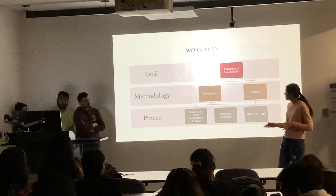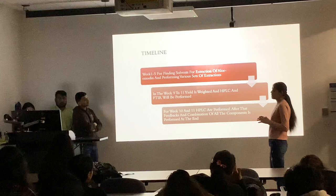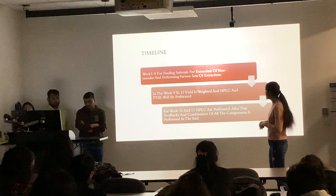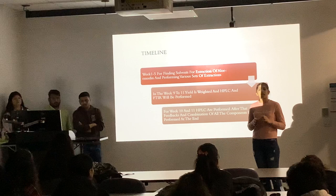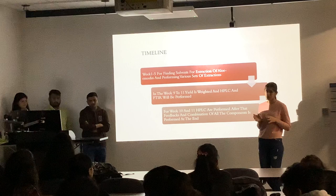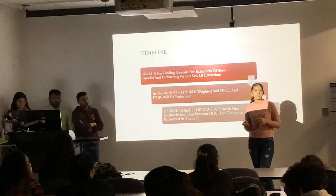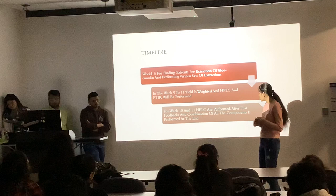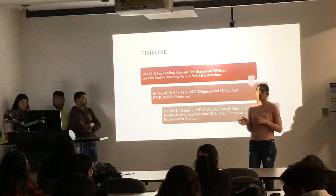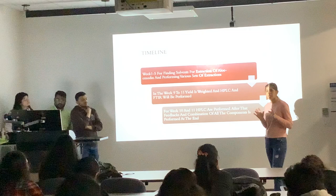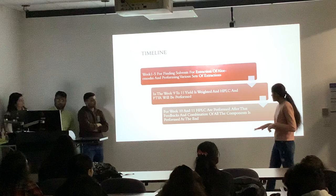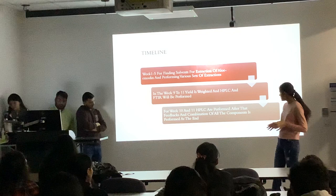This is our timeline. We had to face many changes throughout our project time. In the first five weeks we found the solvent for our extraction methods and used ethanol, then performed three different extraction methods: Soxhlet extraction, sonication extraction, and extraction at room temperature using ethanol. From weeks six to eleven we weighed our yield from the extraction methods and performed HPLC and FTIR for analysis of aloe emodin. In the next weeks we compared all the methods and came to one conclusion.